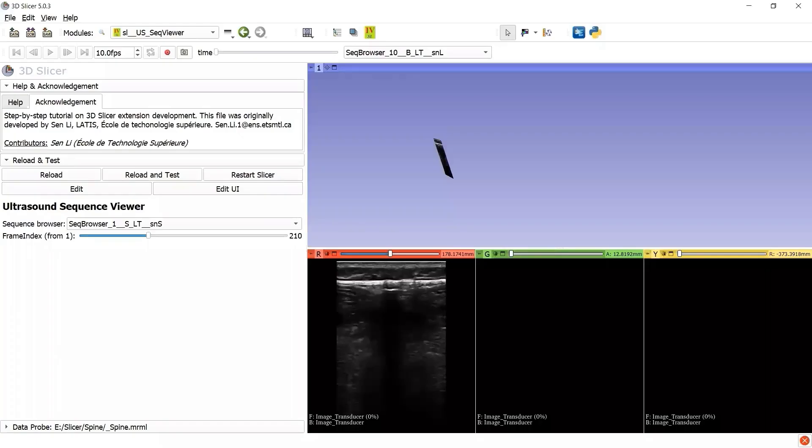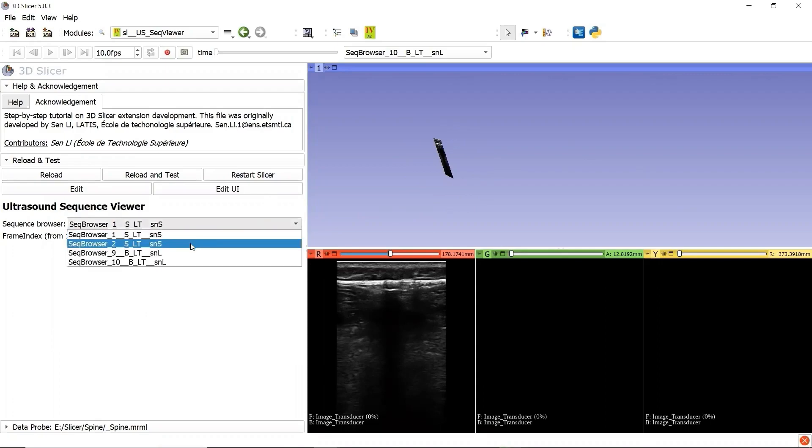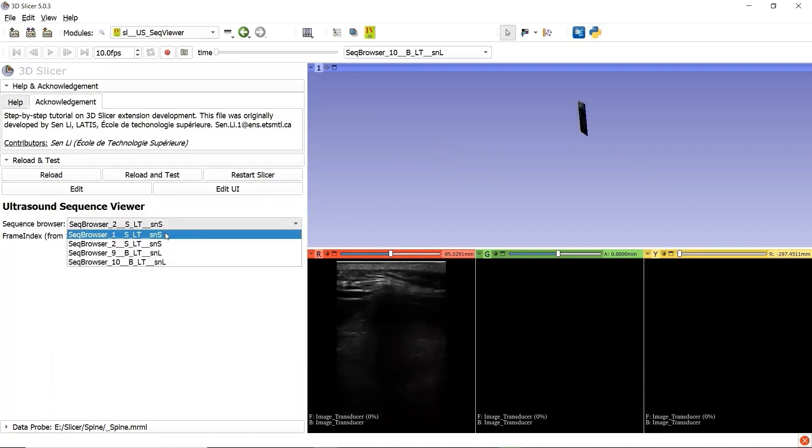Let's go back to the 3D slicer and compare our custom module Ultrasound Sequence Viewer with the Sequence Viewer in the existing module Sequences from 3D slicer. Let's pay attention to the ultrasound image in both 2D widget red and the 3D widget. See the difference when we change the active SequenceBrowser node from the drop-down list in our module. We can observe the change of the active ultrasound image.